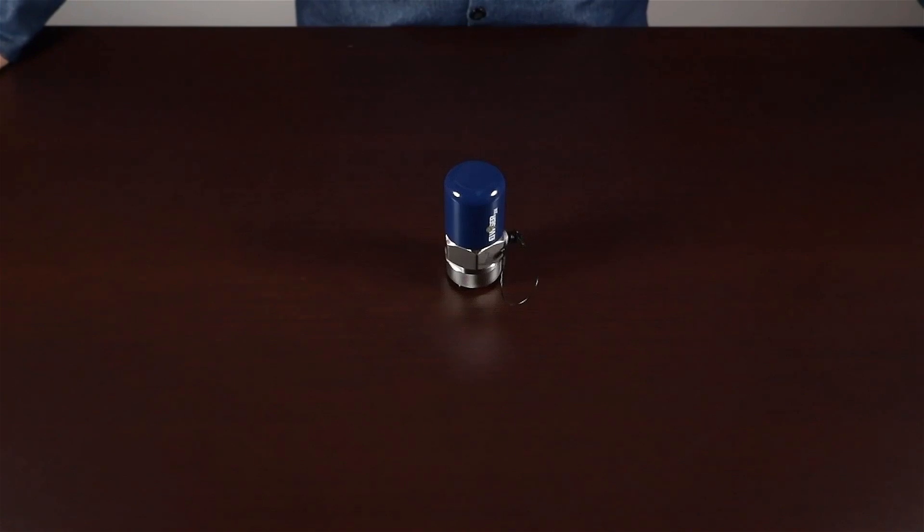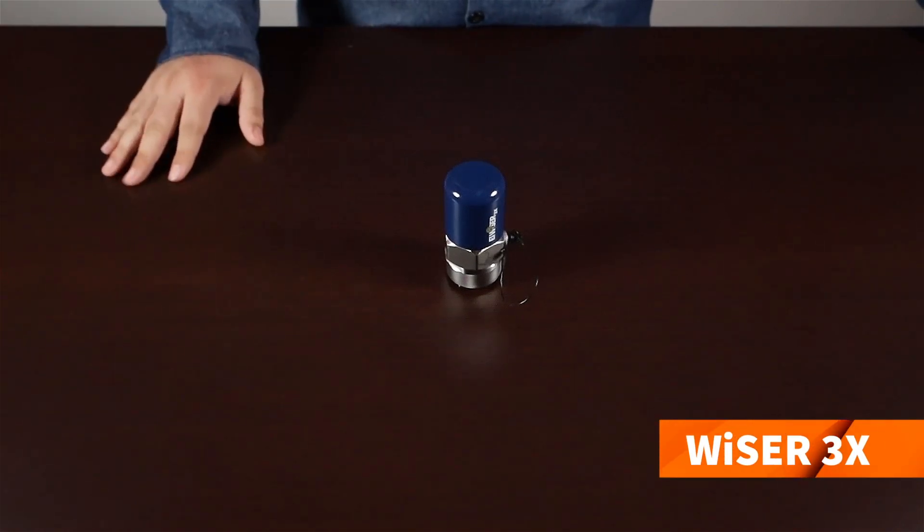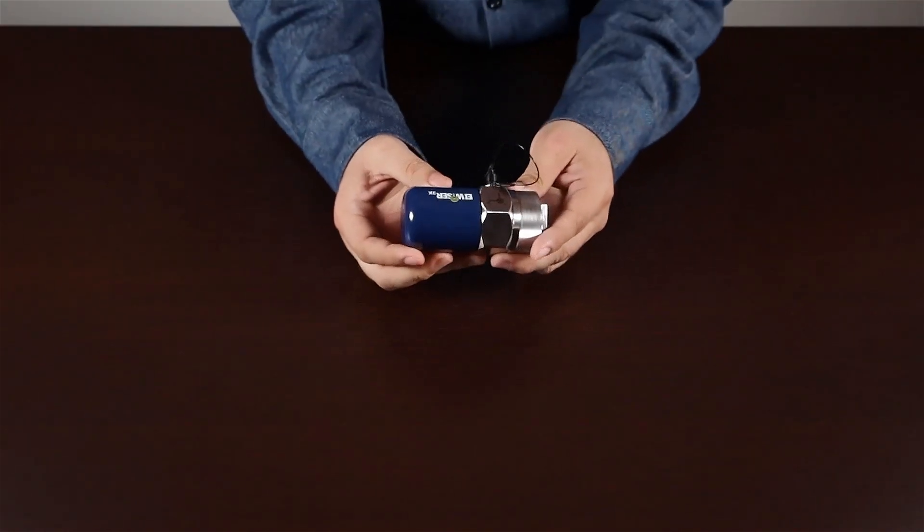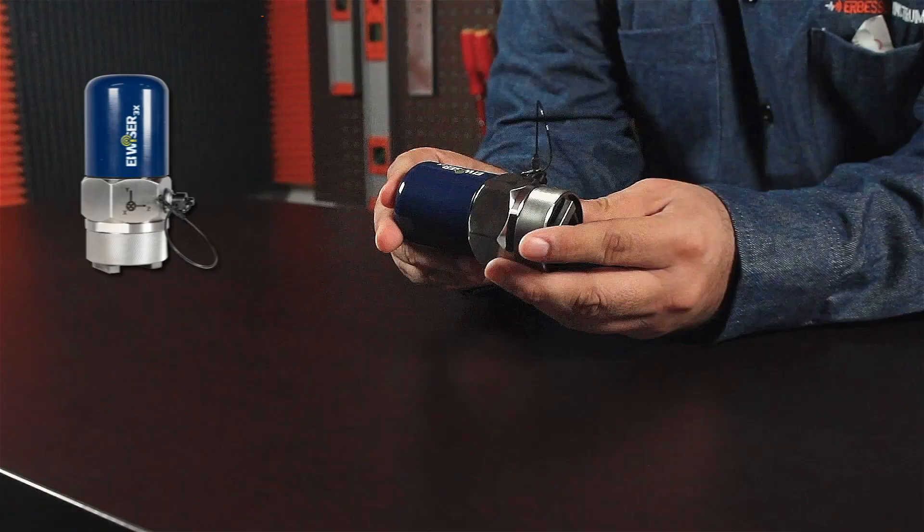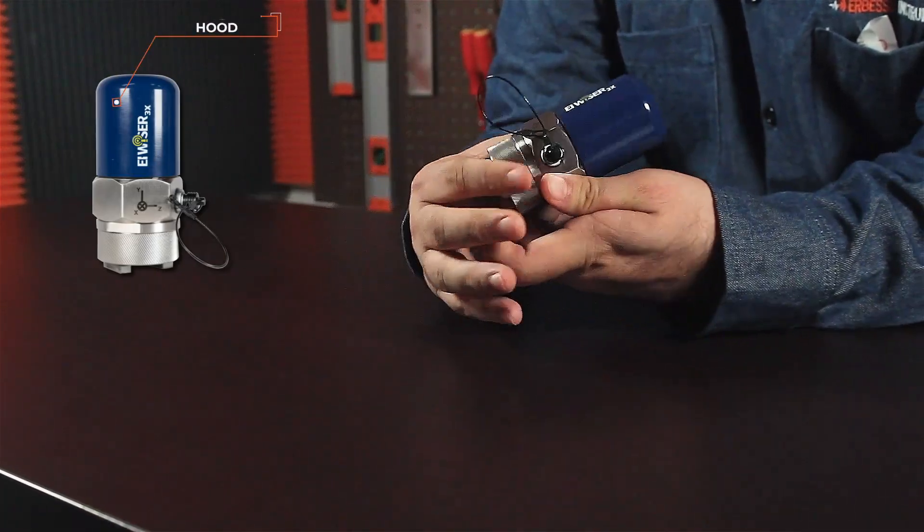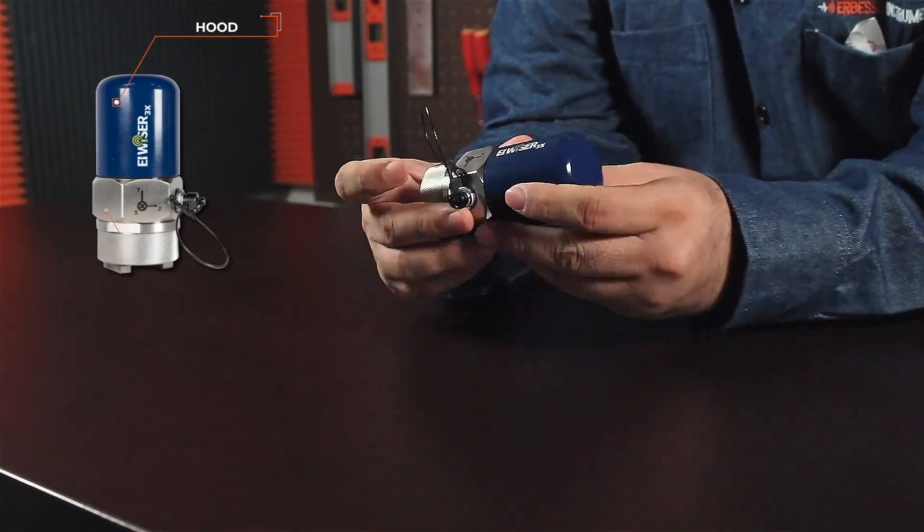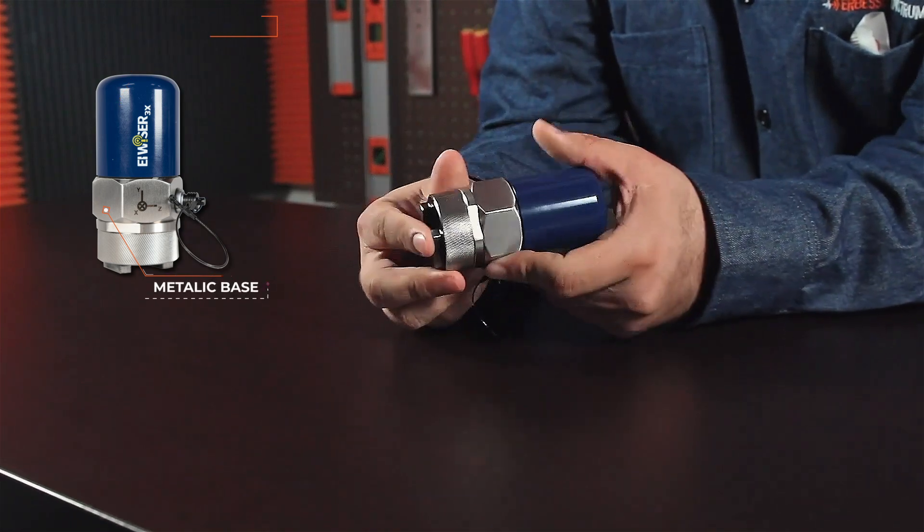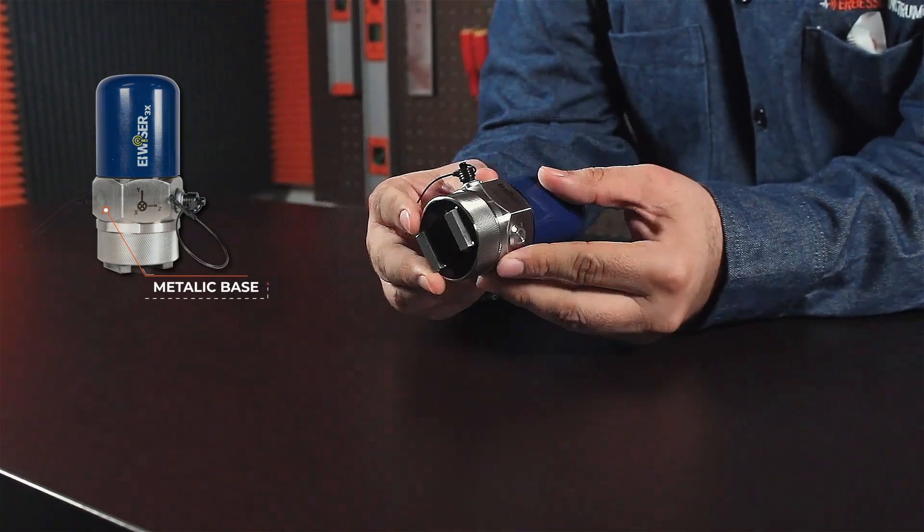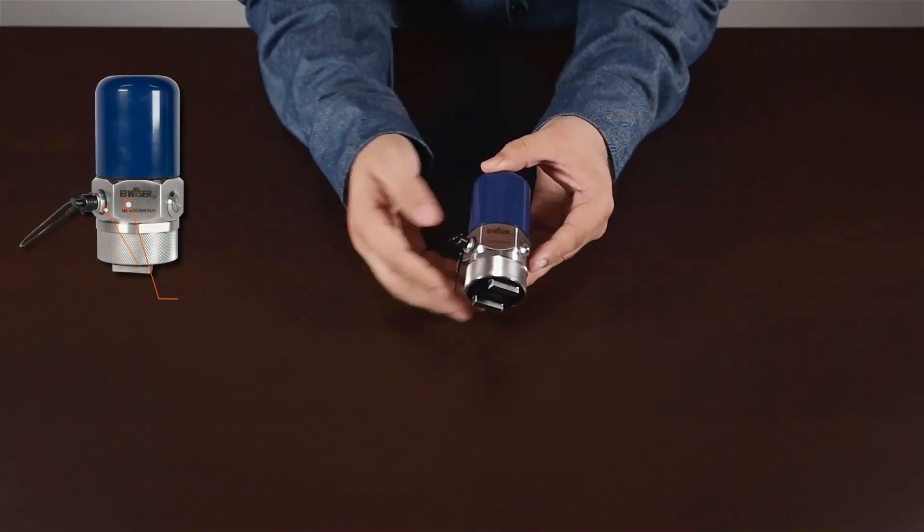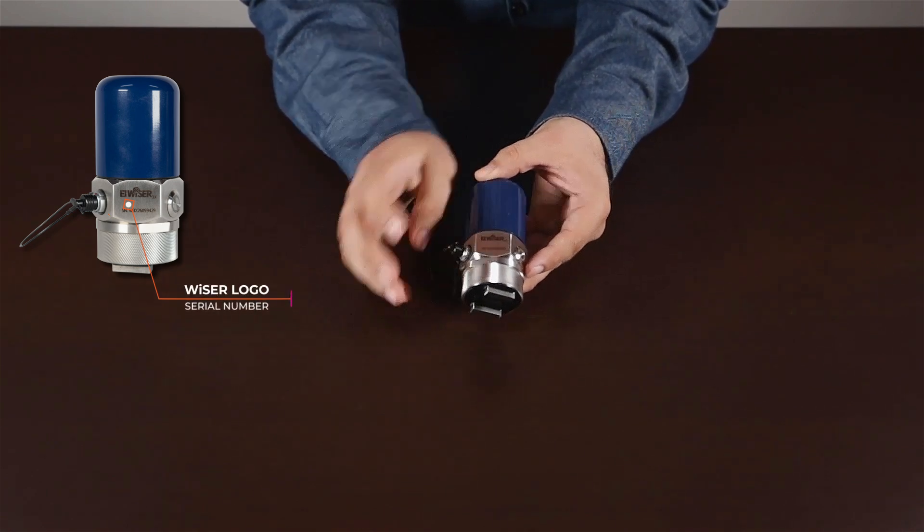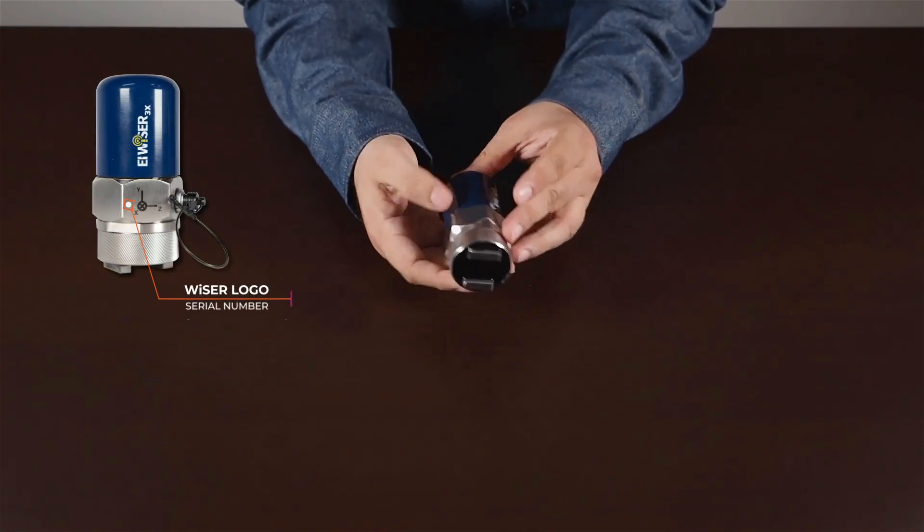Let's start by checking your first item, your new Wiser 3X. Remember, the Wiser 3X consists of three main parts. First, the hood or the cap, where you can find the Wiser logo. Then, we find the metallic base, where we can find multiple elements. In the first segment, you will find the Wiser logo and its serial number. This number is unique for each device.